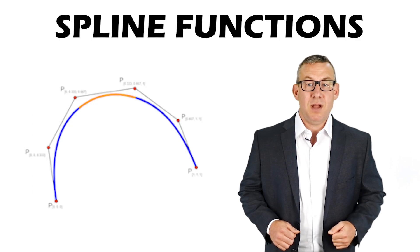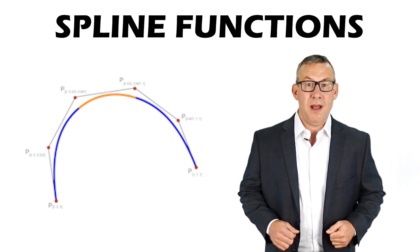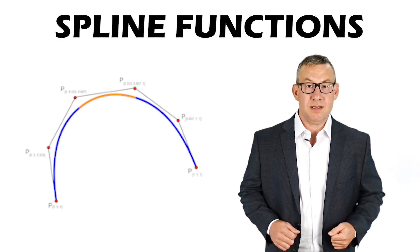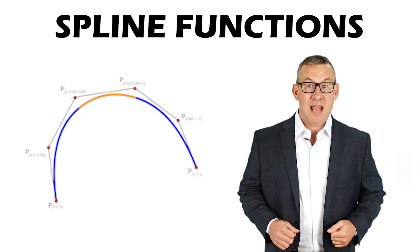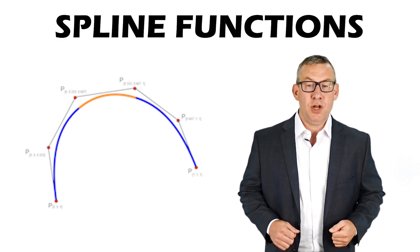Spline Functions are used to mathematically smooth lines between digitized points. A spline is a set of polynomial functions that join smoothly.